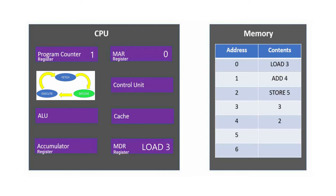The control unit decodes the instruction by comparing it to the instruction set it has stored. The instruction is: transfer the contents of memory location 3, i.e. the number 3, to the accumulator. The control unit now executes the instruction and transfers the contents of memory location 3, the number 3, to the accumulator.